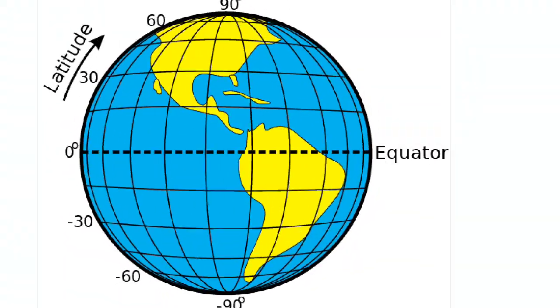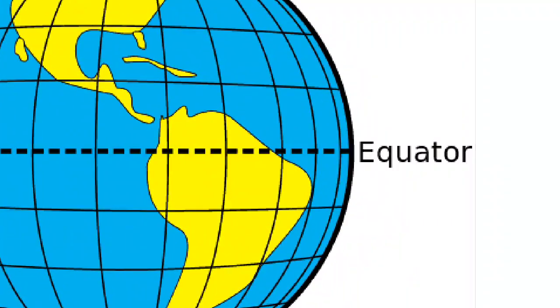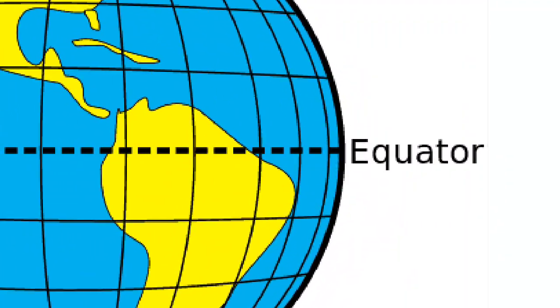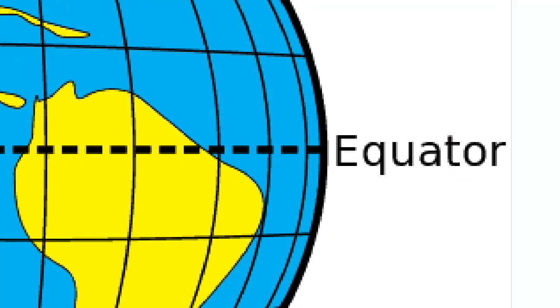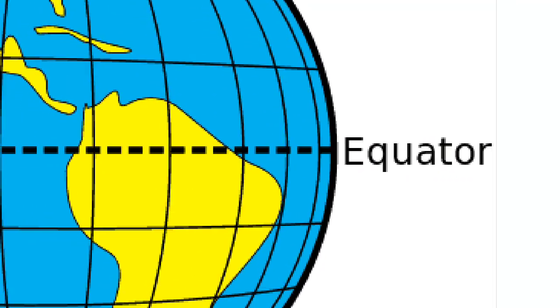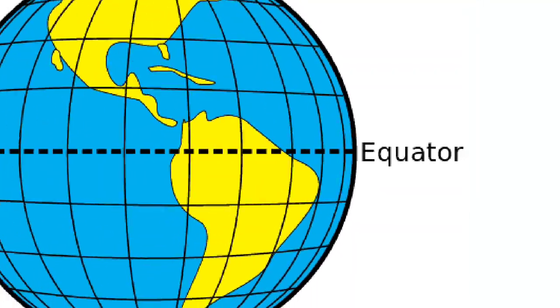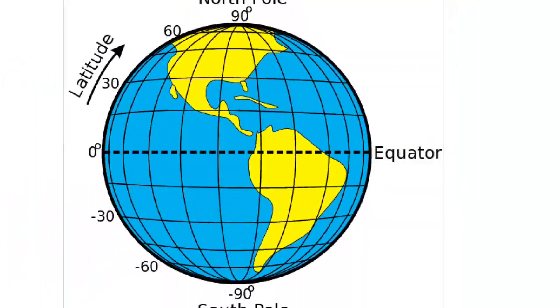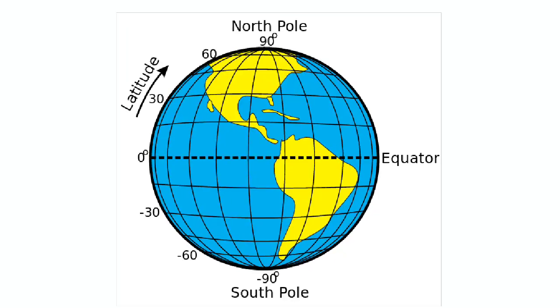And there is another imaginary line that divides the Earth into two equal halves. That is what we say, the equator. Equator is an imaginary line dividing the Earth into north hemisphere and southern hemisphere. It divides the Earth into equal halves. It is an imaginary line. That means we are talking about equator.